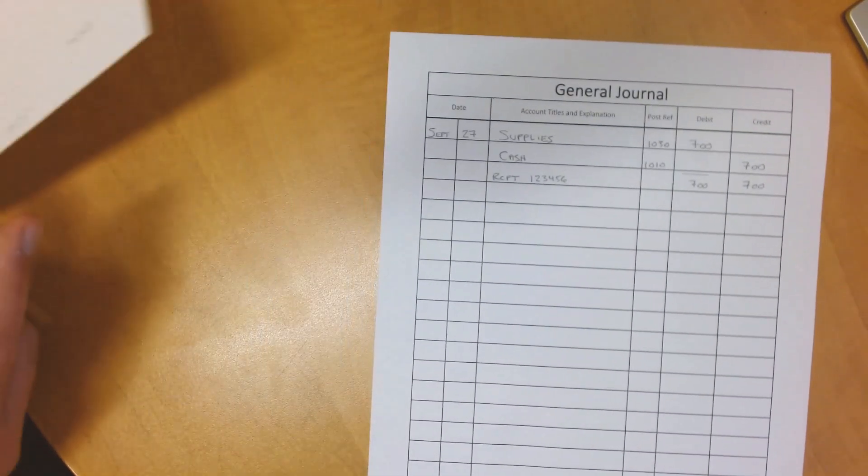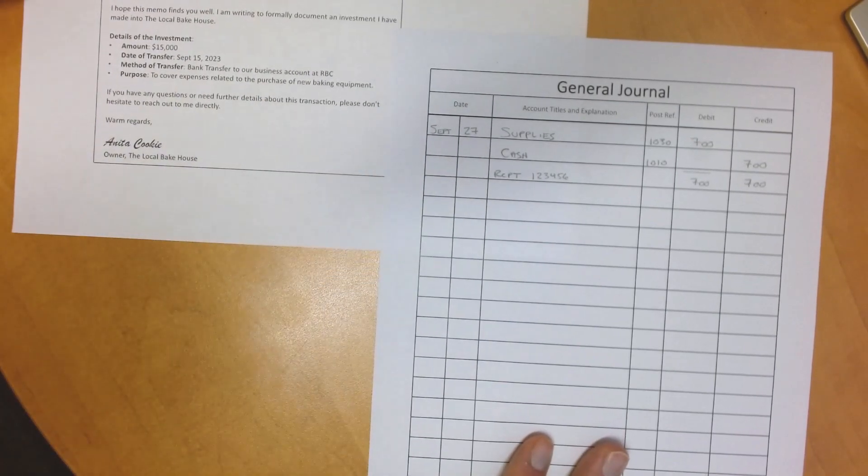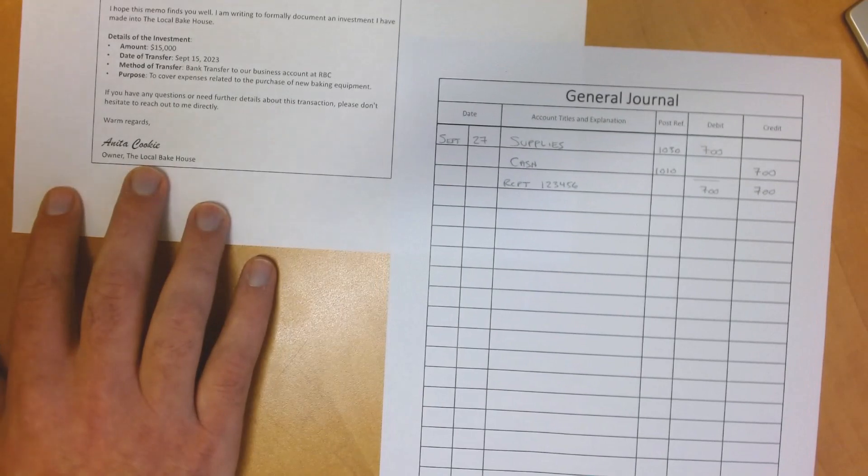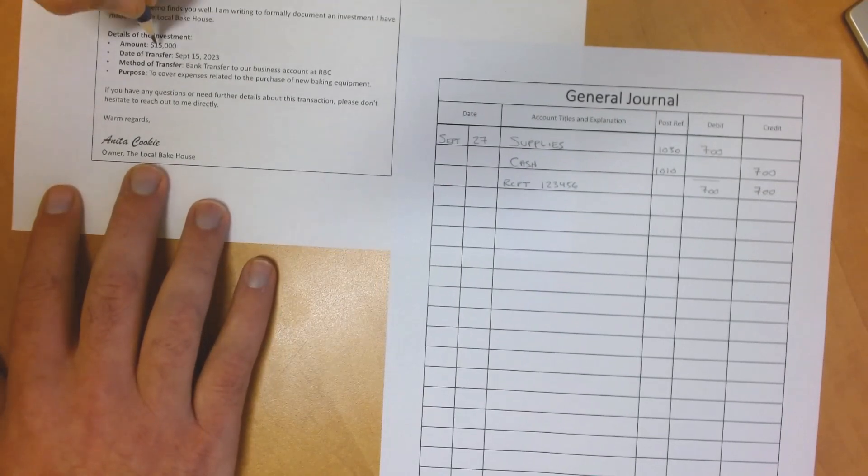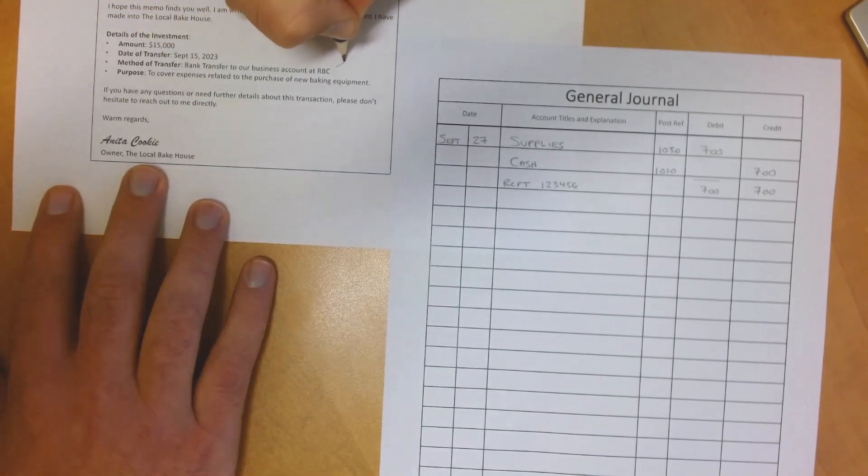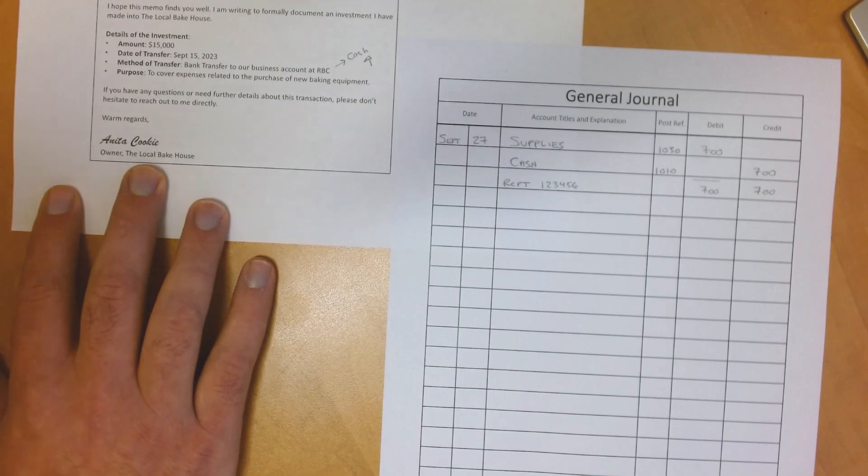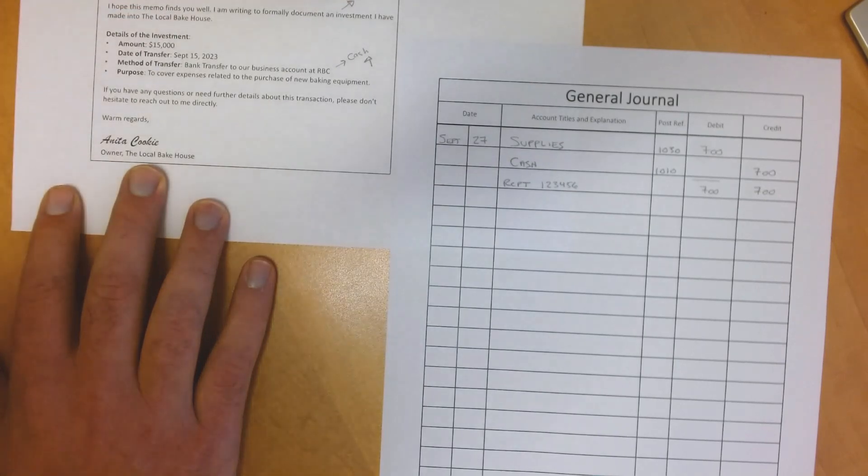Next, we will take a look at an owner's investment. Start with the same process. Decide which accounts are affected and how they need to change using the source document.